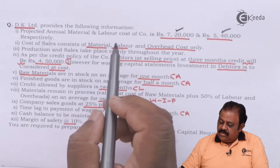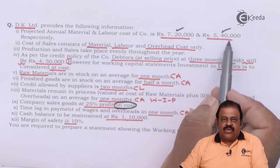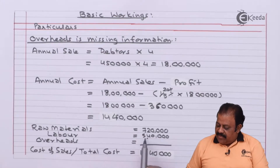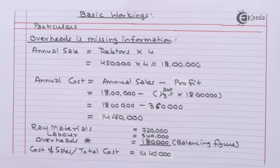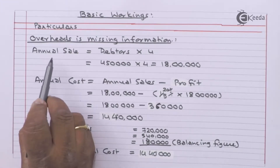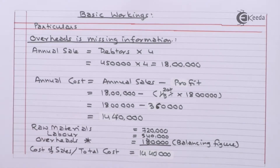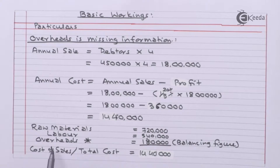In the question, annual material is seven lakh twenty thousand and annual labor cost is five lakh forty thousand. Total cost of sales is fourteen lakh forty thousand. So we can get overheads as a balancing figure — we get one lakh eighty thousand as overheads. The key point is that overheads were not given; we calculated them by first finding annual sales from the debtors figure, then deducting profit to get total cost, and finally deducting raw materials and labor to arrive at the amount of overheads.